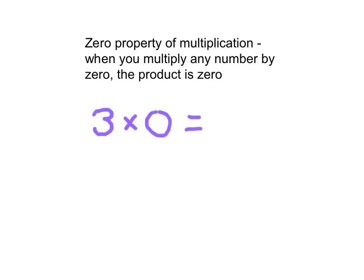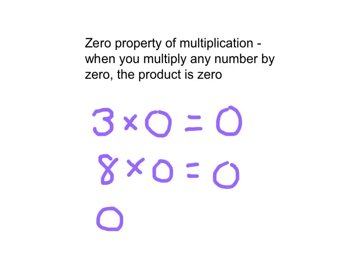Now let's look at another definition. Go ahead and copy it down. 3 times 0 equals 0. And 0 is equal to 17 times 0. Copy down some definitions for yourself — hit pause if you need more time. Those are all examples of the zero property of multiplication: when you multiply any number by 0, the product is 0. The product is the answer to a multiplication problem.